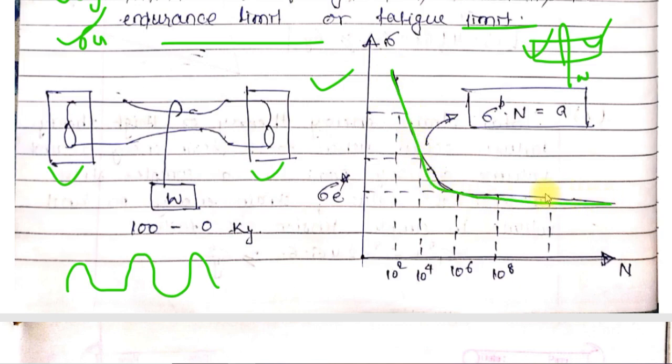Now we plot stress versus number of cycles. We take RPM and measure the stress generated. When we plot this, we observe that initially with increasing number of cycles, the endurance limit or strength decreases. At the starting, number of cycles is less but as fluctuating load increases, the limiting value of strength decreases.